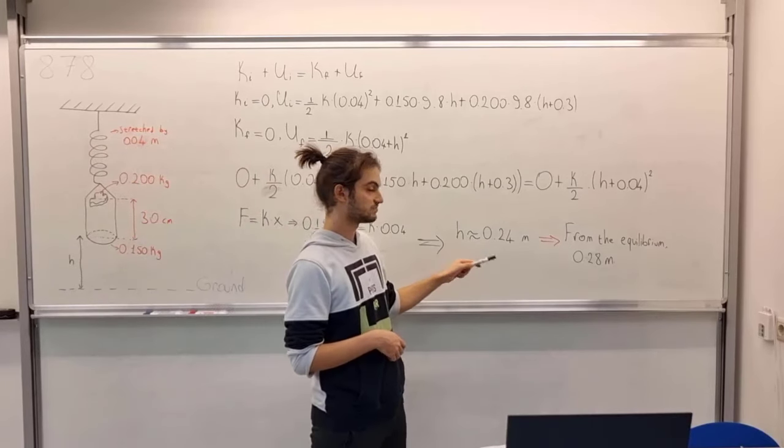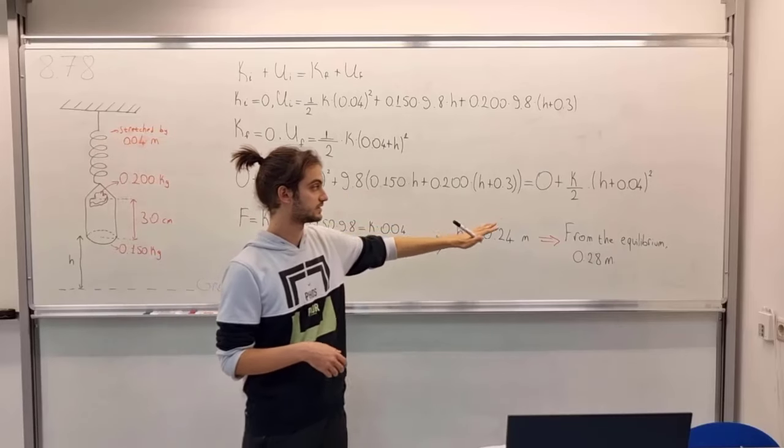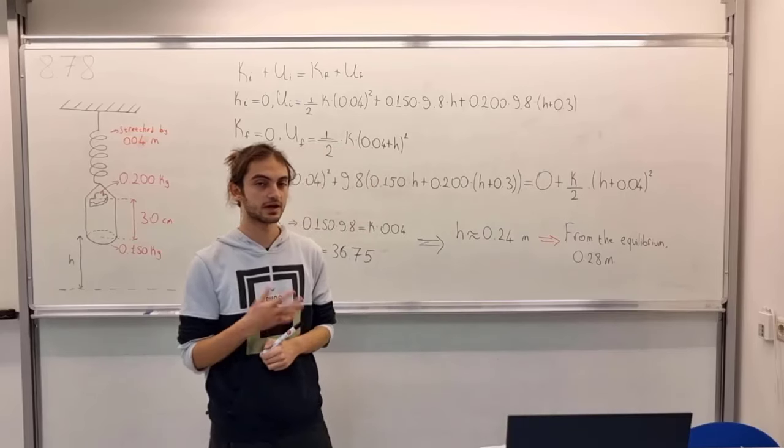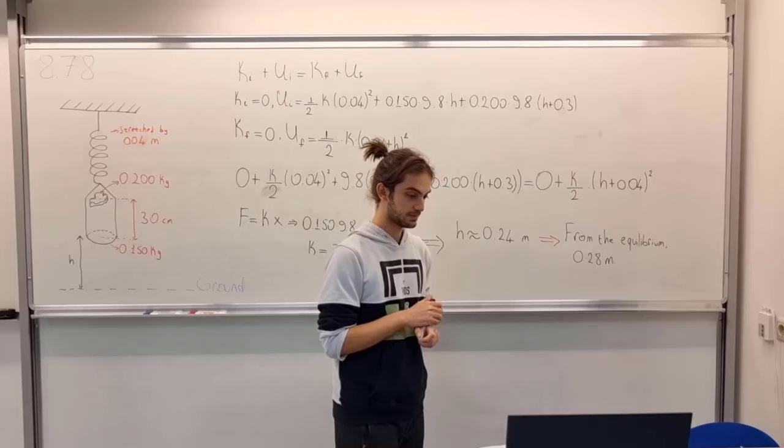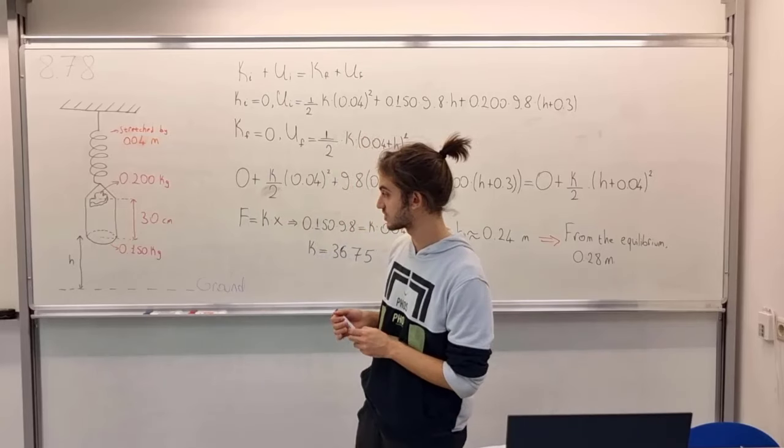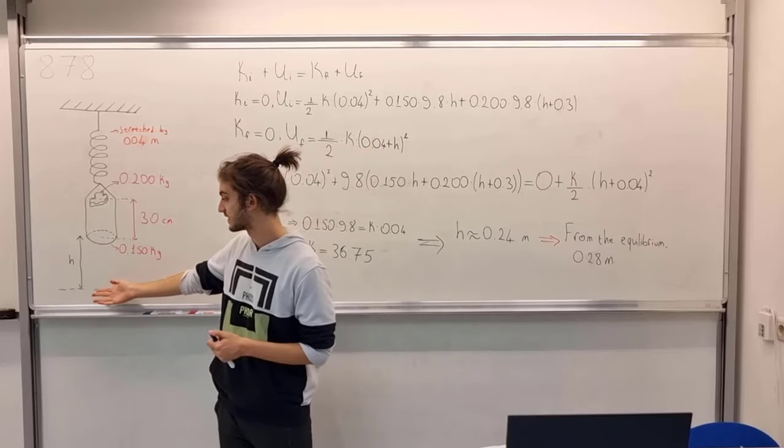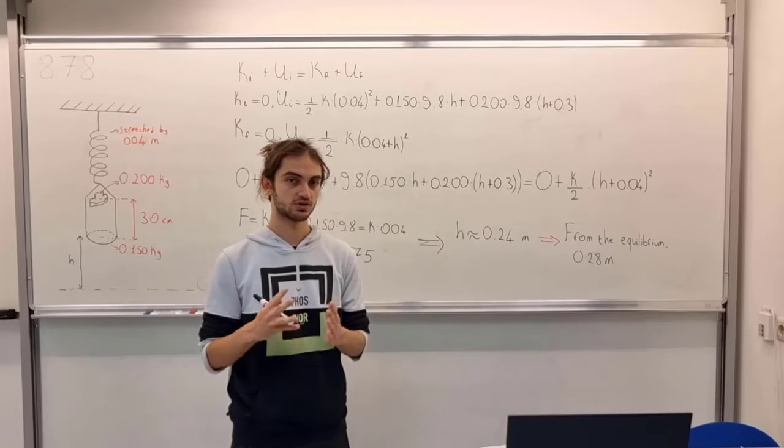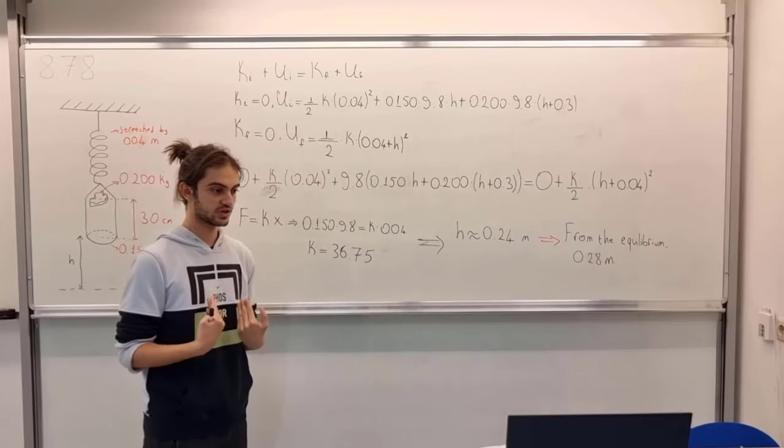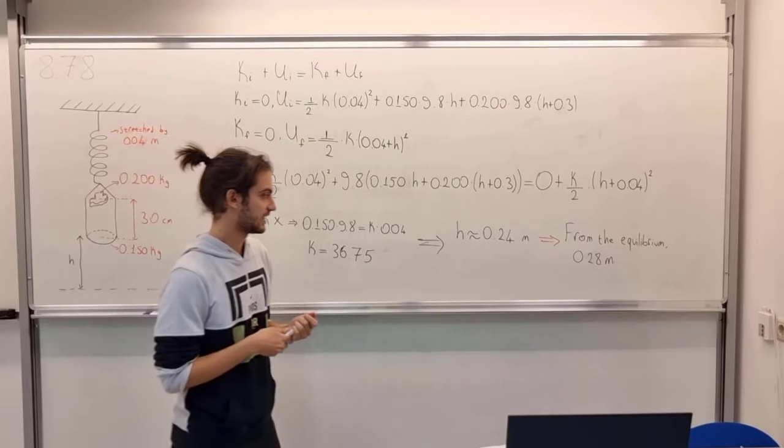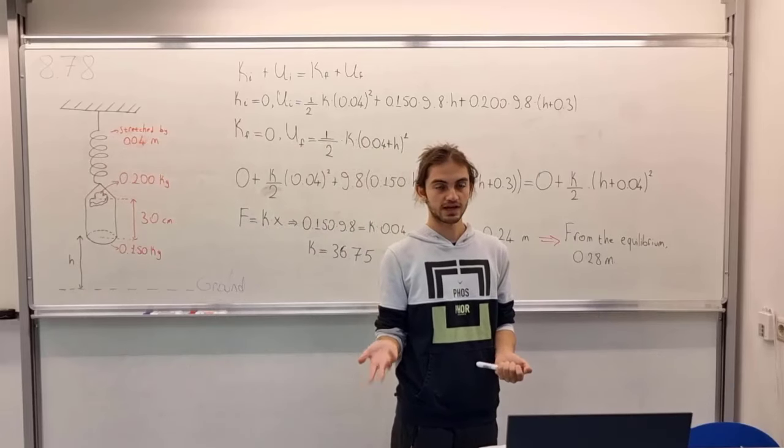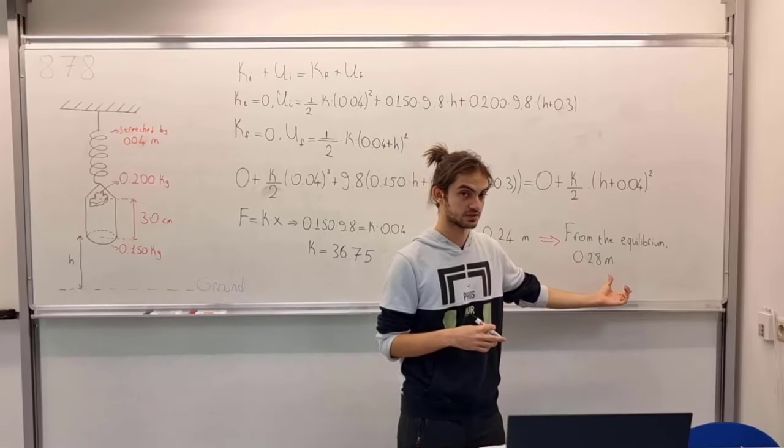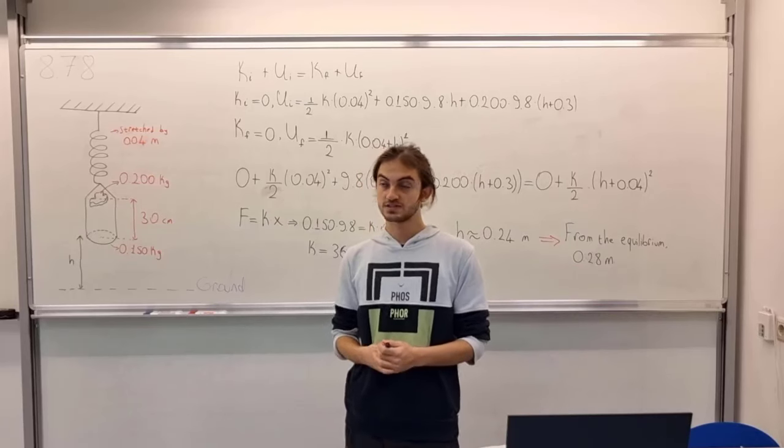Then writing this in here and thus getting h, we get 0.24 meters, around 24 centimeters. But in the question, we can't stop here. We need to find the maximum distance from the equilibrium point. So h is not the maximum. H plus 0.04 is the maximum, because our initial stretch is 0.04 meters. Then adding up those two terms, we get 0.28 meters, around 28 centimeters. And this is the solution to this question.